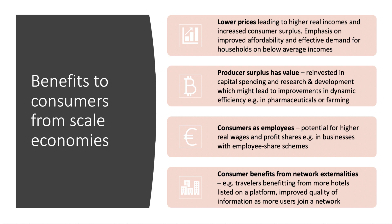Dynamic efficiency improvements might lead to cheaper food or better new drugs, which again has a potential consumer benefit. Many consumers are workers and employees, so if profits and wages are going up in real terms — perhaps through a share ownership scheme — that could have a spillover benefit to consumers. Consumers also benefit from so-called network externalities or network economies of scale. On a hotel listing platform like Booking.com, travelers benefit from more hotels listed. On a digital platform like Google Maps, more users sharing data makes real-time information more accurate.